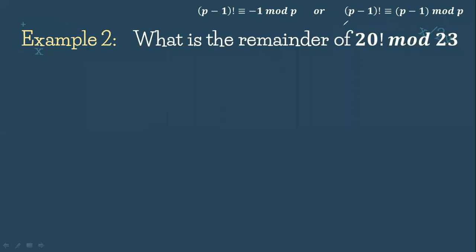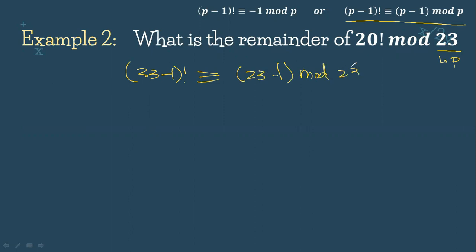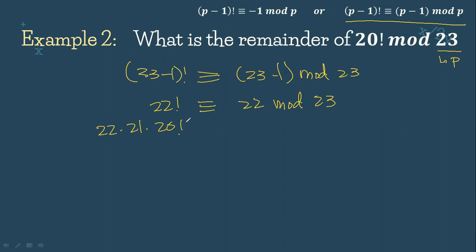For our second example, let's use the other form of Wilson's Theorem. We have 20 factorial mod 23, with 23 as P. So we have (23 minus 1) factorial congruent to (23 minus 1) mod 23, which gives us 22 factorial congruent to 22 mod 23. We need to expand 22 factorial as 22 times 21 times 20 factorial — we stop at 20 because that is what we're looking for — congruent to 22 mod 23.